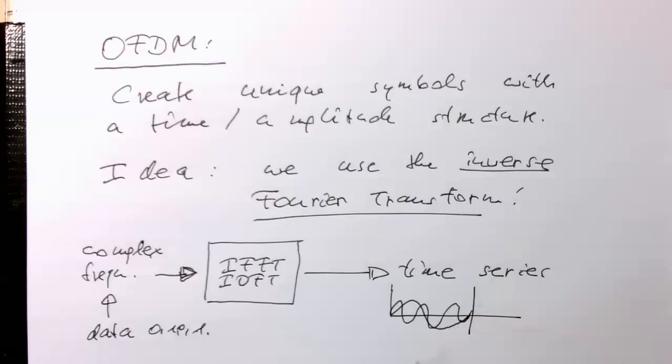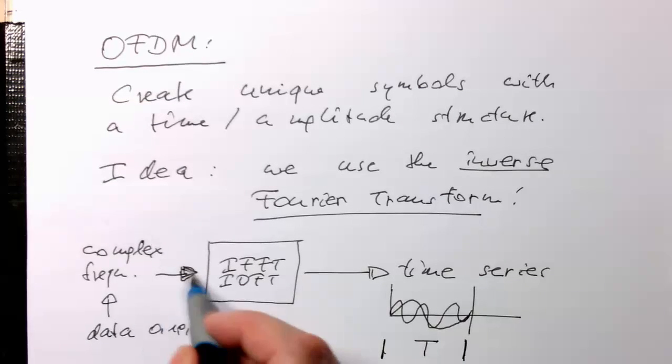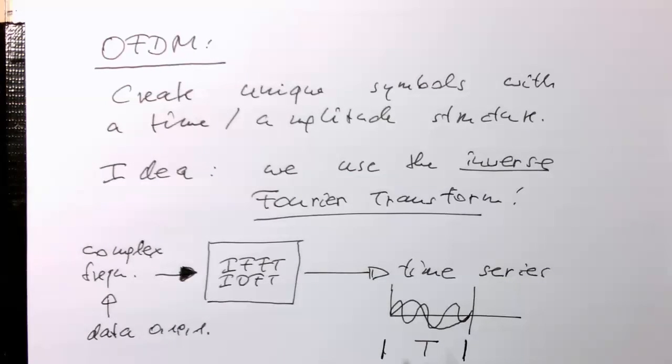So the general idea of the OFDM is very simple. So we use a discrete Fourier transform which has exactly number of samples how long T lasts. And then we're just creating these symbols. Very simple, ingenious idea.